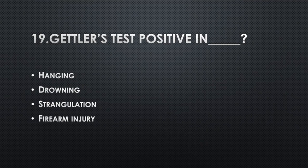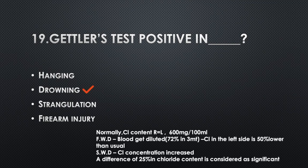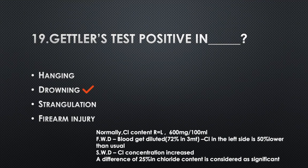Gettler's test is positive in — Option A: Hanging, Option B: Drowning, Option C: Strangulation, Option D: Firearm injury. Answer: Option B, Drowning. Normally, the chloride content is equal in both right and left sides, normal value 600 mg per 100 mL. In freshwater drowning the blood gets more diluted — 72% of blood is diluted within 3 minutes — so chloride in the left side is 50% lower than usual. In seawater drowning, chloride concentration is increased. A difference of 25% in chloride content is considered significant.